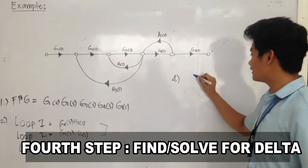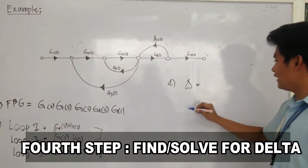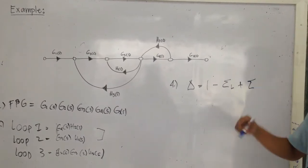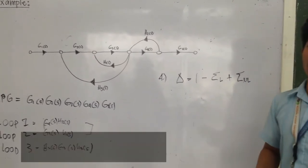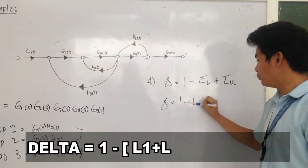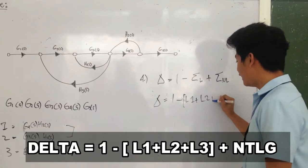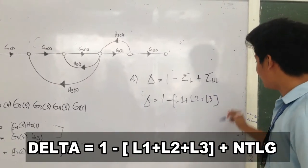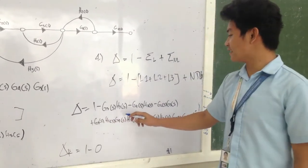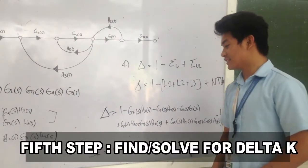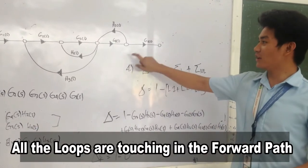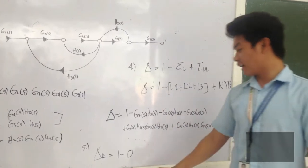The fourth step is to find delta. The formula is delta equals 1 minus the summation of the loop gains, plus the non-touching loop gains taken two at a time, minus those taken three at a time. Since there are no non-touching loop gains taken three at a time, delta equals 1 minus (Loop 1 + Loop 2 + Loop 3) plus (Loop 1·Loop 2 + Loop 1·Loop 3), which gives 1 minus G4H1, G4(s), and so on. The fifth step is the delta gain, which equals 1 minus the loop gains that do not touch the forward path. Since all loops touch the forward path, the delta gain equals 1 minus 0, which is 1.